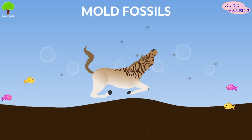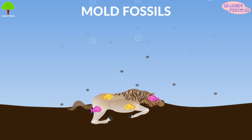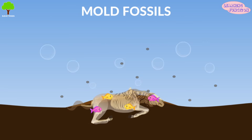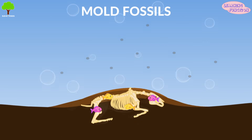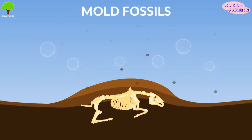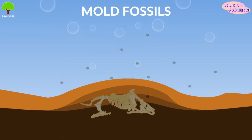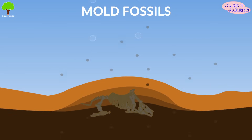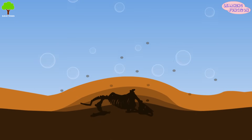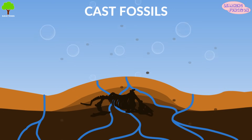Mold fossils are formed when a plant or animal dies and is covered by sediment. Its flesh decays over time and its bones deteriorate, leaving a cavity below the ground surface.